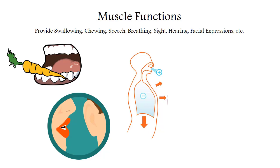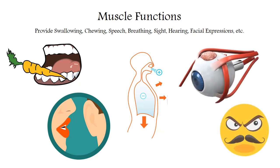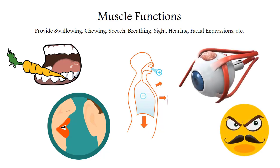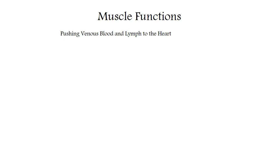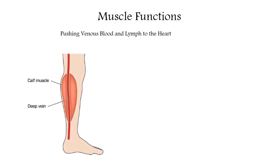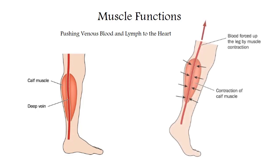Muscles also participate in the work of our organs of sight and hearing and provide facial expressions. Another important function, sometimes forgotten, is associated with the effect of muscle contractions on the movement of body fluids — namely lymph and venous blood. With active movements, muscles contract and each contraction causes rhythmic compressions of blood and lymphatic vessels. As a result, blood and lymph move toward the heart, which facilitates its work and prevents edema. That is why physicians call skeletal muscles peripheral hearts or muscle pumps.